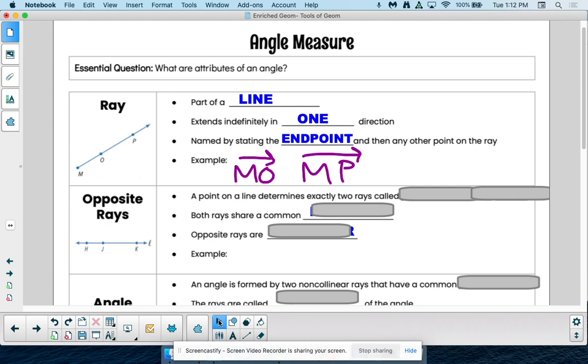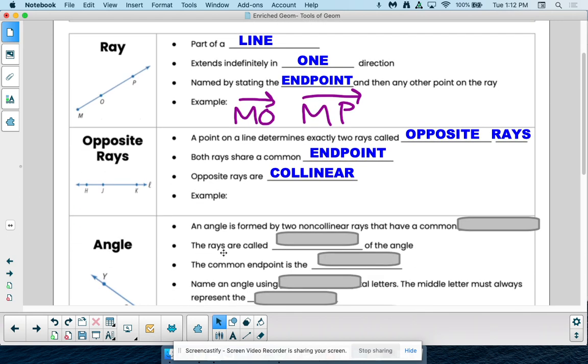Okay, now opposite rays have the same starting point and then jet out opposite ways. So we call those opposite rays, and they're actually collinear because they really make a line. They're the same starting point and then just continue on in opposite directions. So those three points are actually collinear.